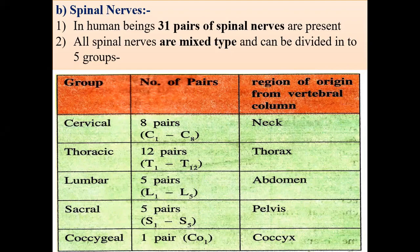The last group is called coccygeal, and only one pair arises in humans. It is symbolized as CO for coccygeal. In all, 31 pairs: 8 in the cervical, 12 in the thoracic, 5 in the lumbar, 5 in the sacral, and 1 pair in the coccygeal region — representing all the spinal nerves.